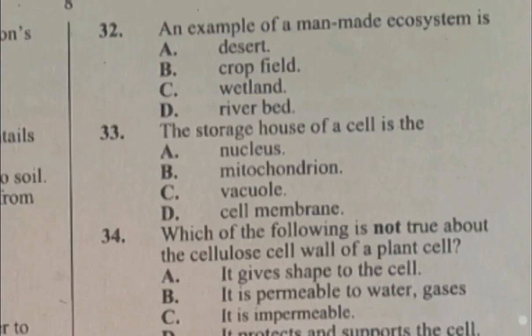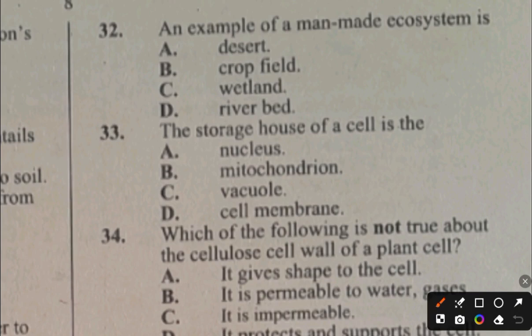Question 32. An example of a man-made ecosystem is: A. Desert, B. Crop field, C. Wetland, D. River bed. The answer to question 32 is B, crop field. Question 33. The storage house of a cell is the vacuole. The answer to question 33 is C, vacuole.